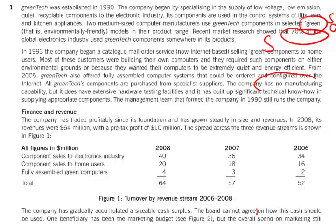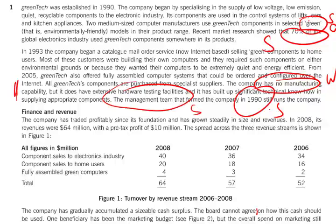Further on down, the company has no manufacturing capability. This is probably some sort of weakness, though you can look at it either way. It could be a strength — if you've got no manufacturing capability, it means all your costs are variable. However, it does mean that you are at the beck and call of your manufacturers to some extent. For the time being, I'll put it down as a weakness — we may want to change that when we get to actually writing out the SWOT analysis. It does have extensive hardware testing facilities, and this is probably a strength. Furthermore, the management team from 1990 still runs the company, and undoubtedly you can build this up as a strength — these people have immense industry knowledge. Continuity of management is generally regarded as a good thing.